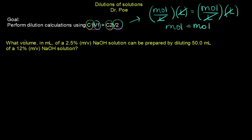Okay, so in this problem, what volume in mils, so let's make sure our volume is in mils, of a 2.5% mass-volume sodium hydroxide solution can be prepared by diluting 50 mils of a 12% mass-volume NaOH solution.